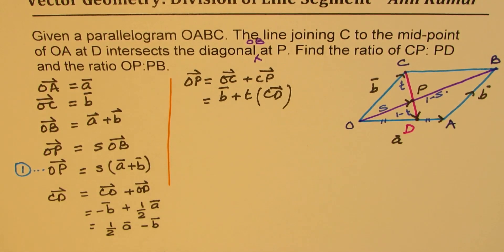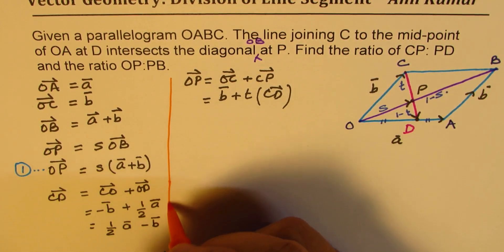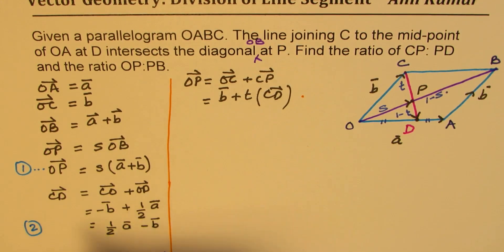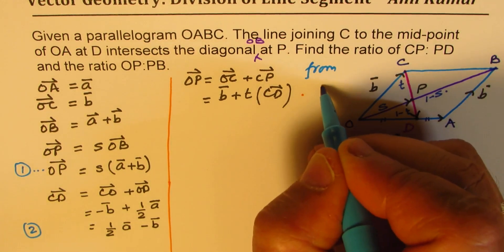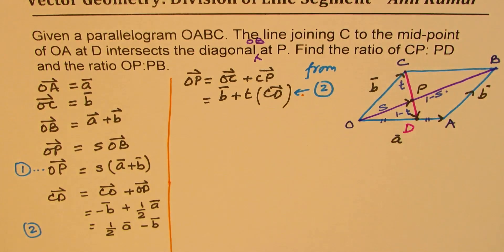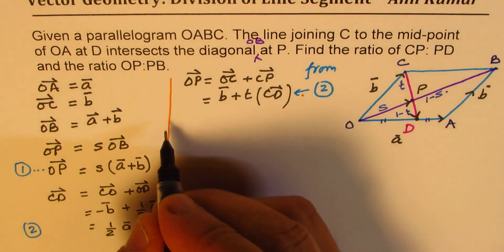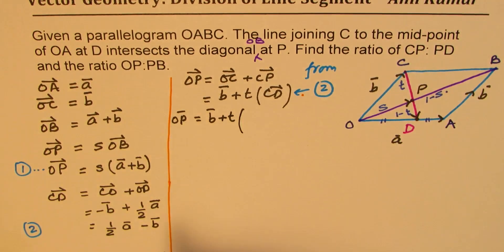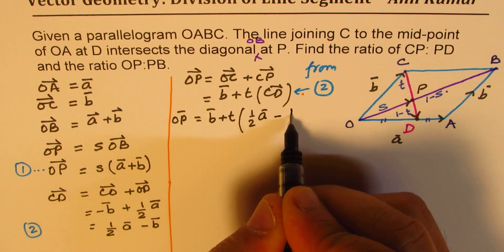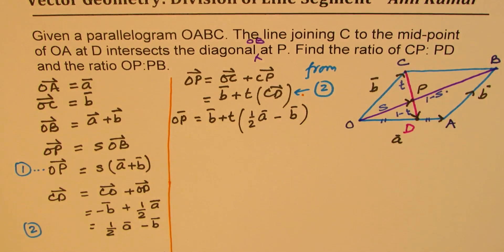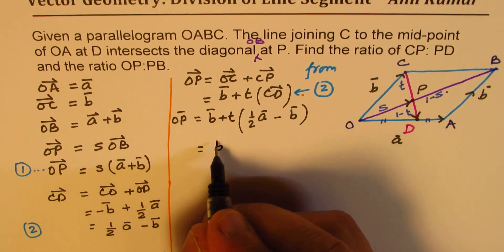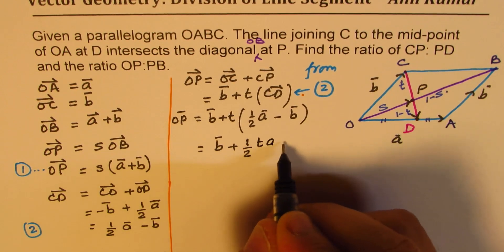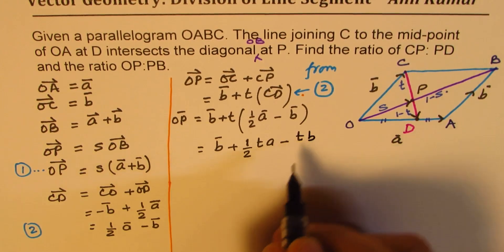So we'll substitute this in our equation here. So let's call this as our equation 2, and then from 2, we'll substitute here for CD. So we get OP equals B plus T times half A minus B. Now let's open this bracket.